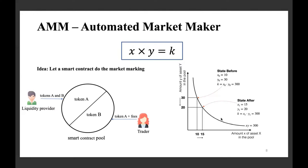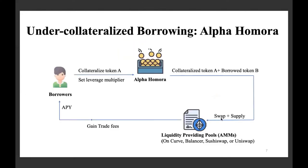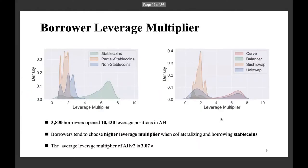Let's consider an example of undercollateralized borrowing, in which borrowers provide the collateralized token and the borrowed token to AMMs — for example, pools like Curve, Balancer, SushiSwap, and Uniswap. If this borrower serves as a liquidity provider, they can gain some trading fees from the liquidity-providing pool, and they expect to gain a positive APY.